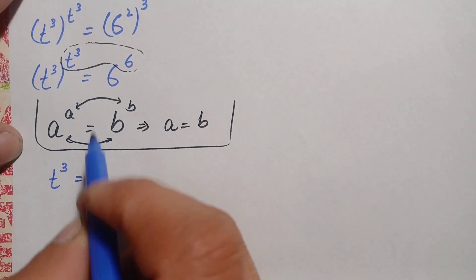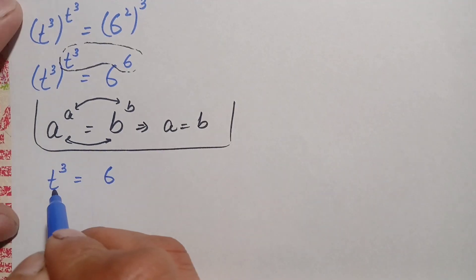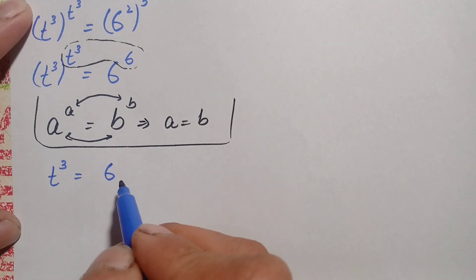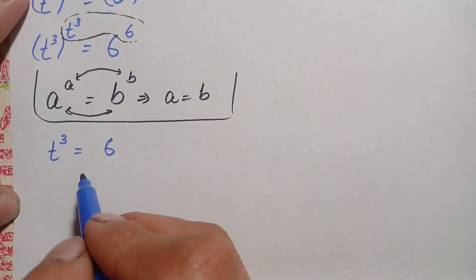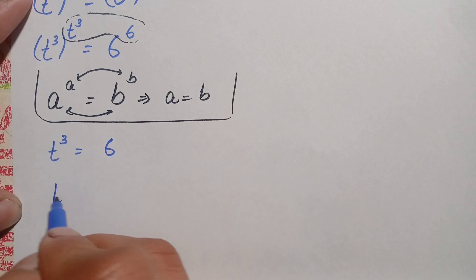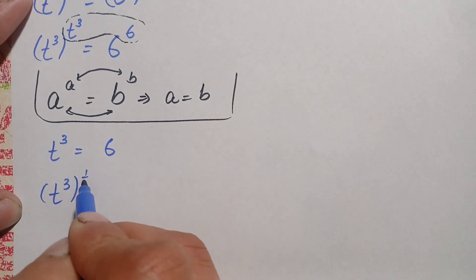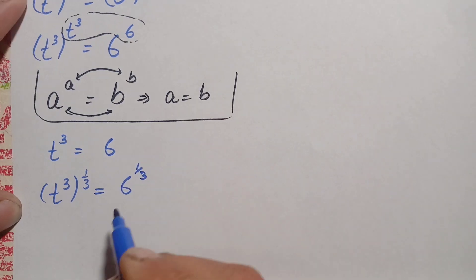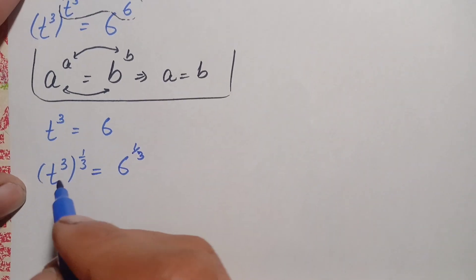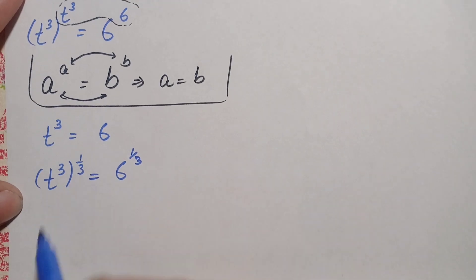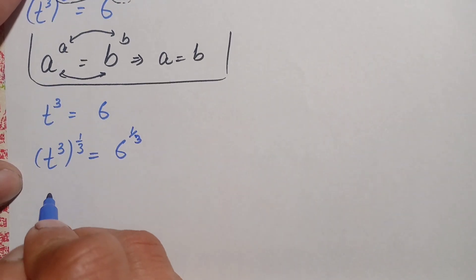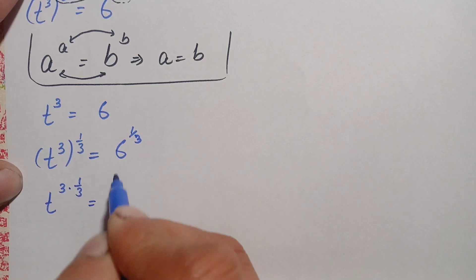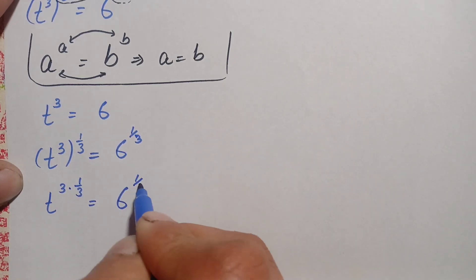So t cubed is equal to 6. Now there is a cube over t, so we will take the cube root, or raise to the power 1 over 3, on both sides. This becomes t cubed all raised to power 1 over 3, equal to 6 raised to power 1 over 3. On the left hand side we multiply the powers: 3 times 1 over 3.